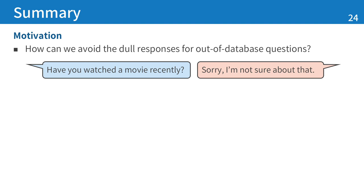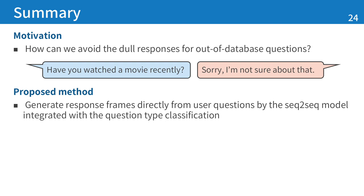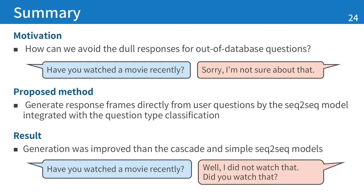To summarize this study: the motivation is how to avoid dull responses for out-of-database questions. Our proposed method generates response frames directly from user questions using a sequence-to-sequence model integrated with question type classification. The experimental results show that generated samples are improved by the integrated sequence-to-sequence model. Thank you.